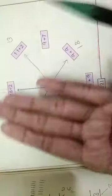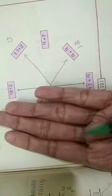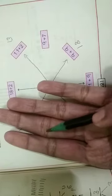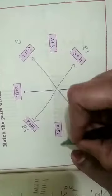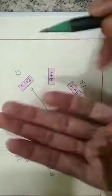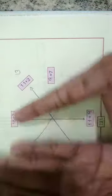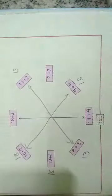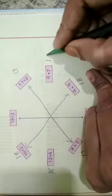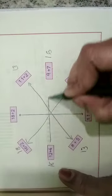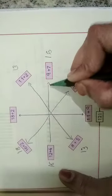Next, 12 plus 4 — which number comes after 12? That is 13, 14, 15, 16. Next, 9 plus 7 — which number comes after 9? That is 10, 11, 12, 13, 14, 15, 16. These two sums have equal answers, so we match like this.